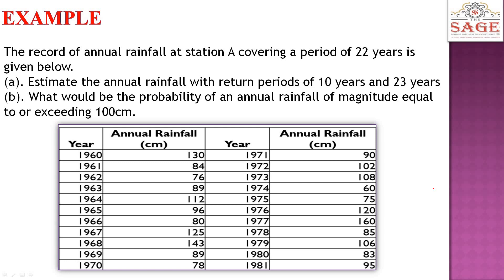Let's take an example to understand probability analysis and return period in detail. The record of annual rainfall at station A covering a period of 22 years is given. We need to estimate the annual rainfall with return periods of 10 years and 23 years, and find the probability of annual rainfall of magnitude equal to or exceeding 100 cm. So we have two questions based on 22 years of data: return period for 10 years and 23 years, and the probability.